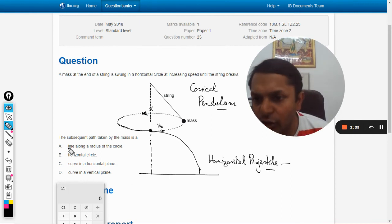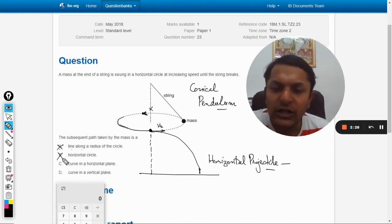According to our A, B, C, D options: A is line along the radius of the circle—no, horizontal circle, not at all, because it is moving down and it is vertical. Curve in a horizontal plane—no.